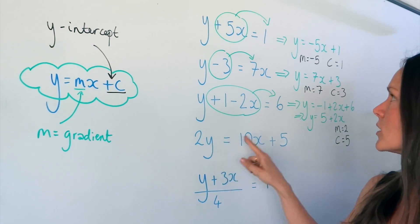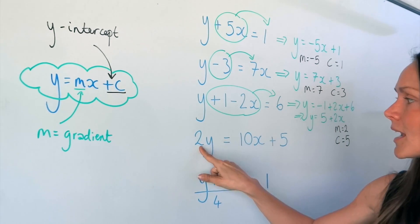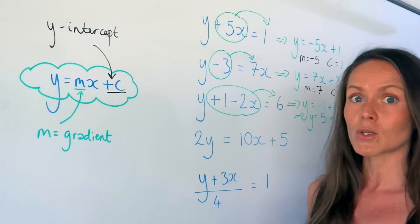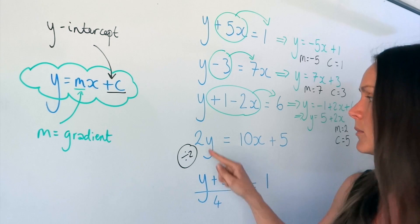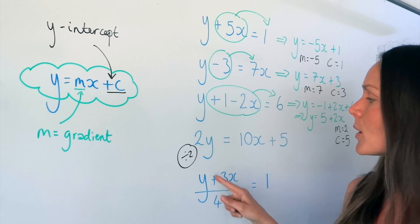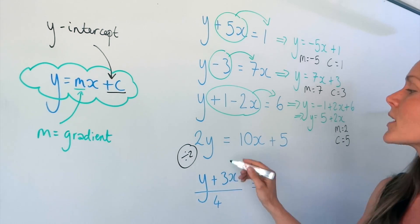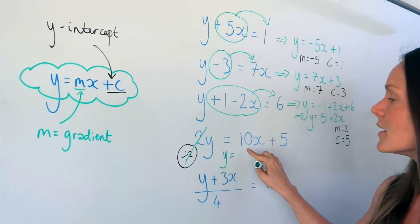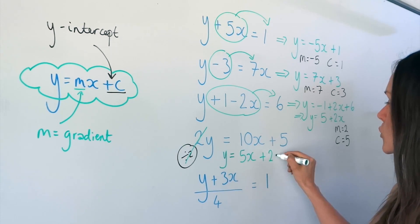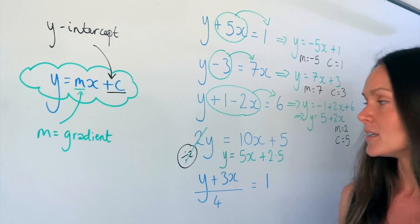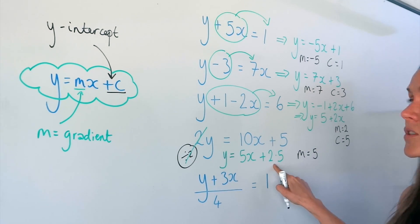In example four we've got 2y. Remember, it has to be 1y equals mx plus c, so I need to get rid of this 2. The opposite of multiplying by 2 is dividing by 2, so I divide everything in the equation by 2. The 2y cancels to give 1y. 10x divided by 2 is 5x, and 5 divided by 2 gives 2.5. So m, the gradient, is positive 5, and the y-intercept is positive 2.5.